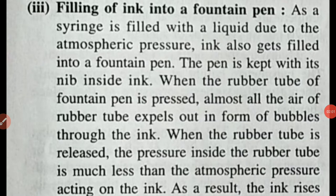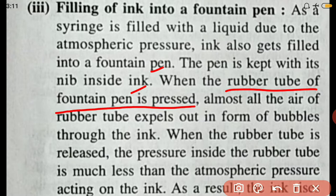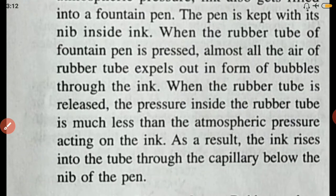Filling ink into a fountain pen works the same way as filling a syringe. The pen's nib is kept inside the ink, and the rubber tube of the fountain pen is pressed so that almost all the air in the rubber tube expels out as bubbles into the ink. When the rubber tube is released, the pressure inside it is much less than the atmospheric pressure acting on the ink, so ink rises into the tube through the capillary below the nib.